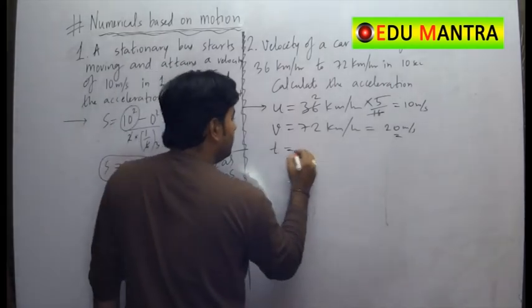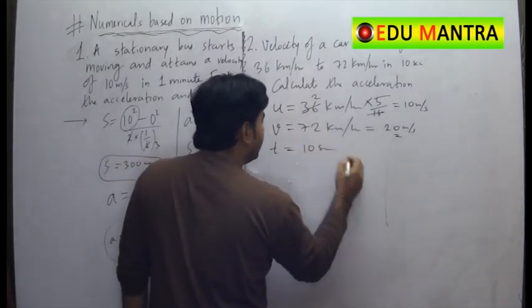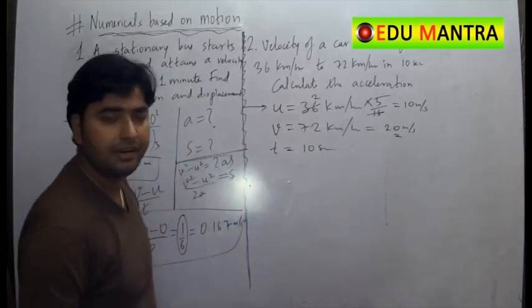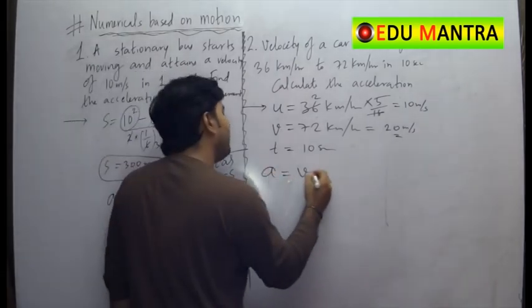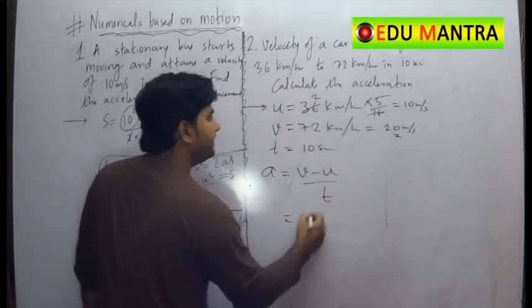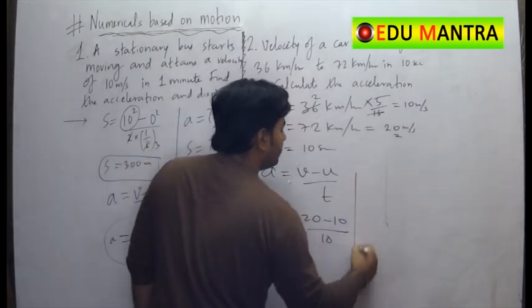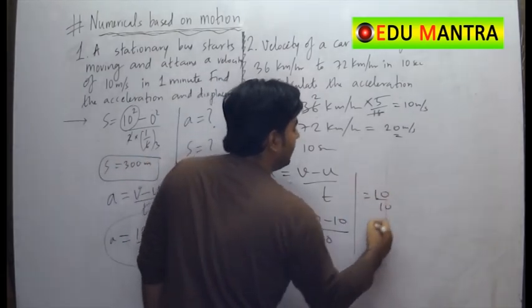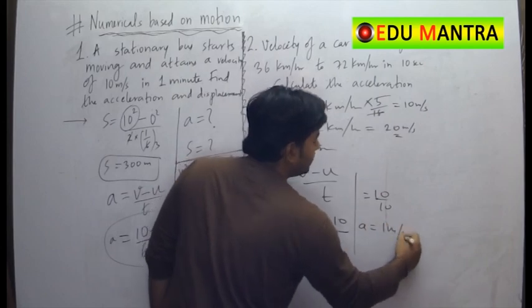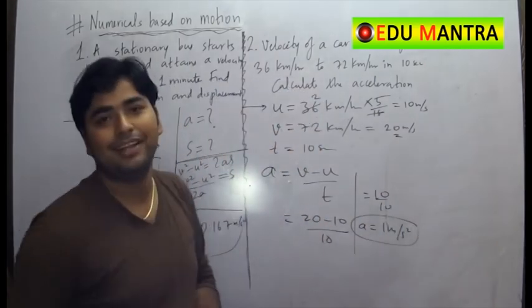What is the time of change of velocity? It is 10 seconds. We need to find the acceleration. Very simple. Acceleration is v minus u by t. That is 20 minus 10 by 10. So that will be 10 by 10. How much is the acceleration? Yes, it is 1 meter per second square.